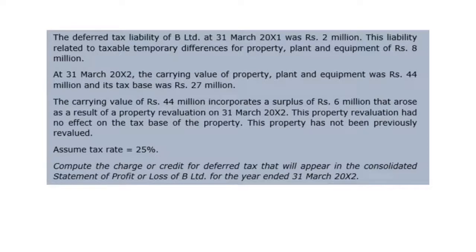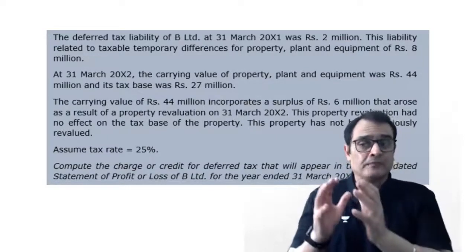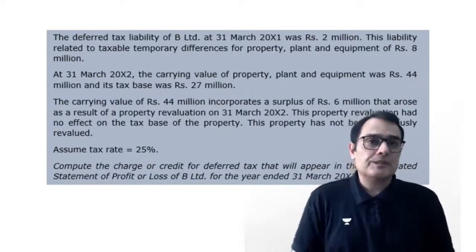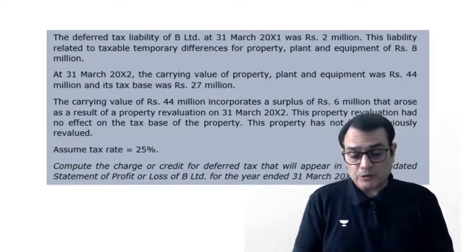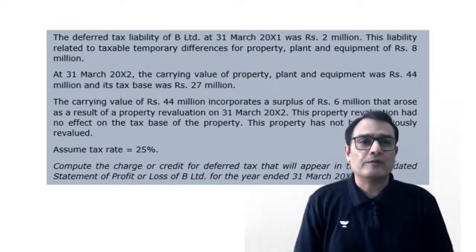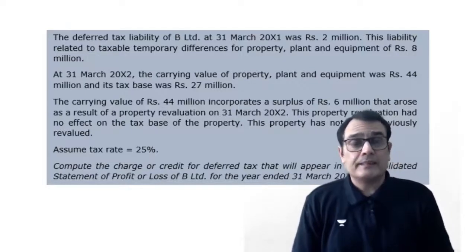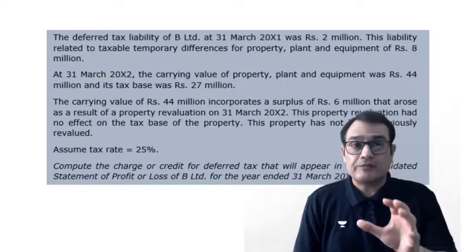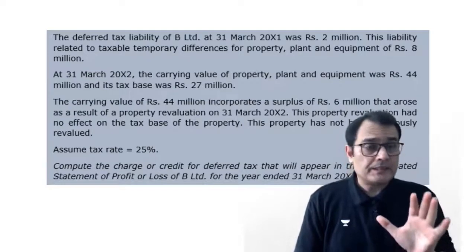The tax rate is 25%. Applying the steps: step one — carrying amount 44 million; step two — tax base 27 million; step three — taxable temporary difference 17 million; step four — DTL at 25% on 17 million = 4.25 million. The opening DTL was 2 million, so the increase in DTL is 2.25 million. The deferred tax expense to be recorded is 4.25 minus 2 million, which equals 2.25 million.